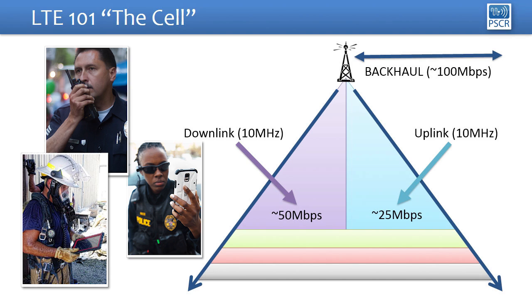The uplink transmission is done by the device, and battery is obviously critically important to device operations. So the uplink technology needs to preserve battery life, therefore you can't get the same throughput levels as you can on the downlink.